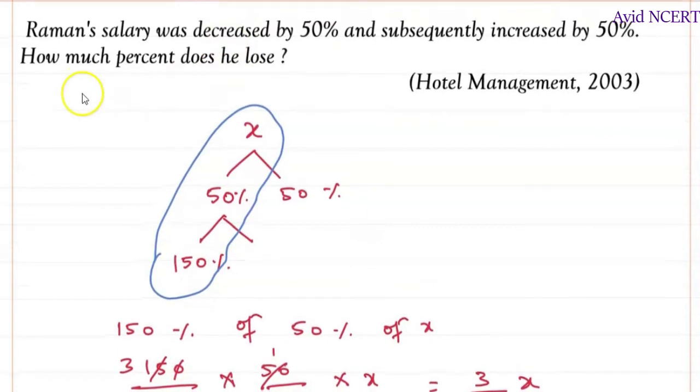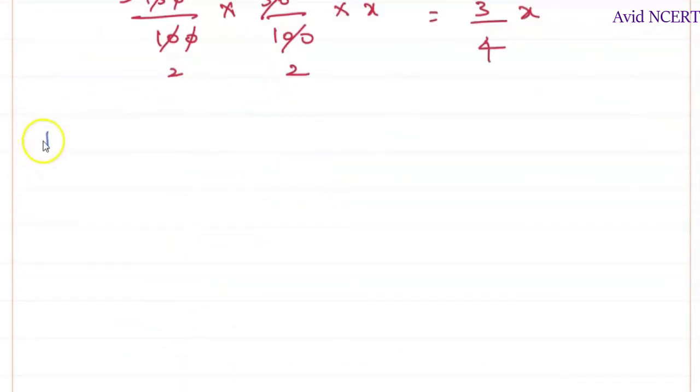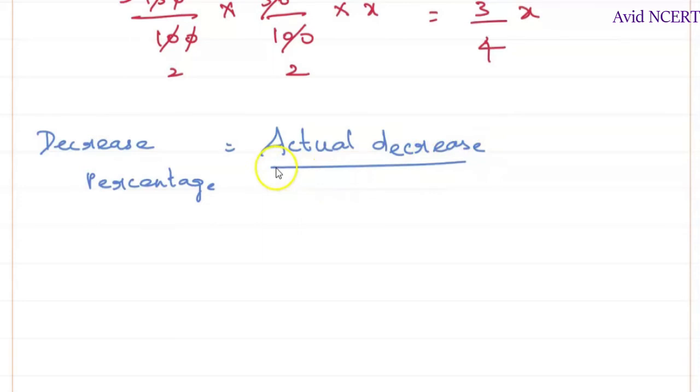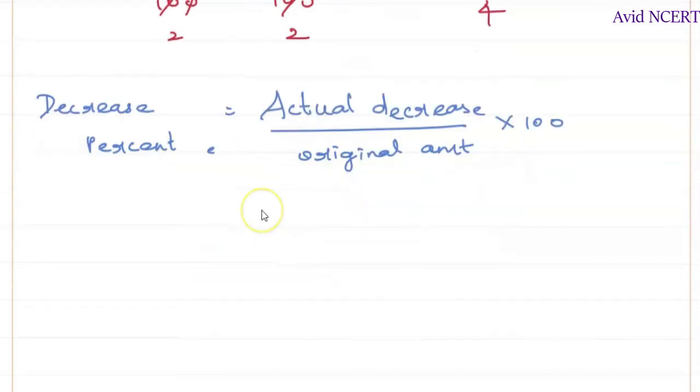So now we have to find how much percent does he lose. It is decreased. So the decreased percentage can be found by actual decrease that is the difference between the original and the decreased value divided by the original amount times 100. Actual decrease is the original value minus the decreased value.